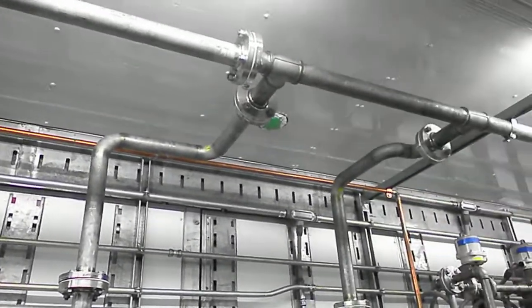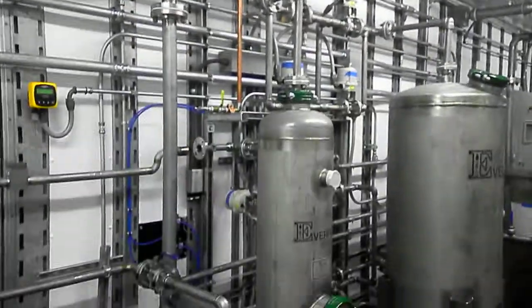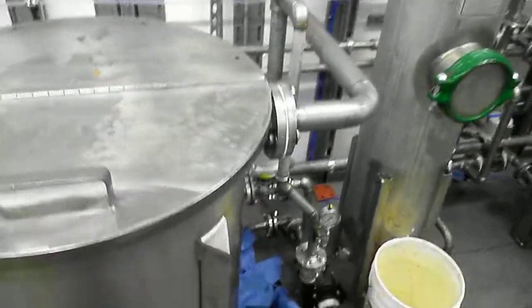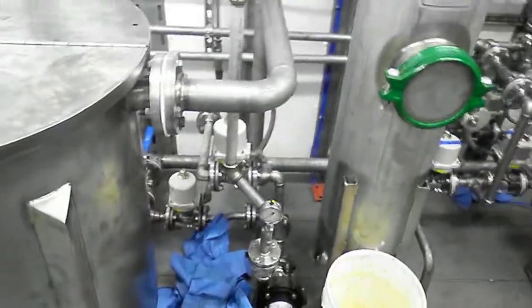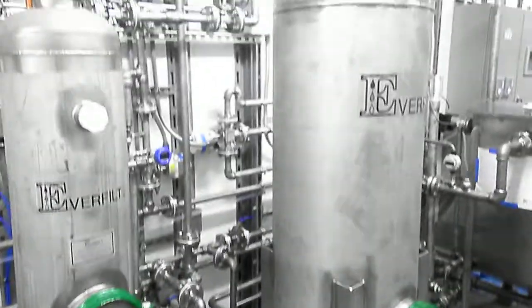The pipe ahead is our vent header. Out of the lamella effluent tank, there's media filter A. Media filter B.